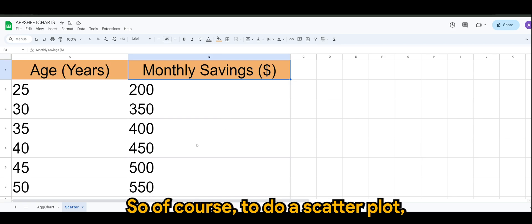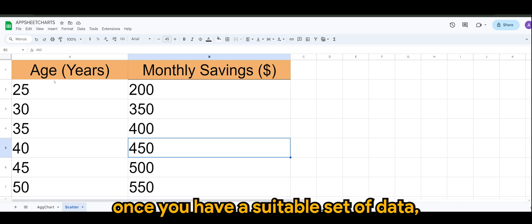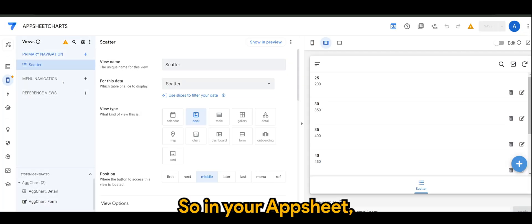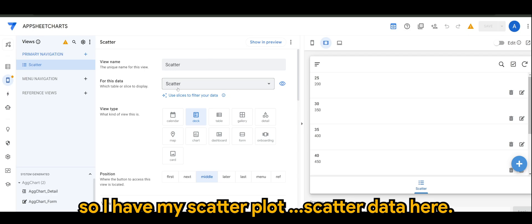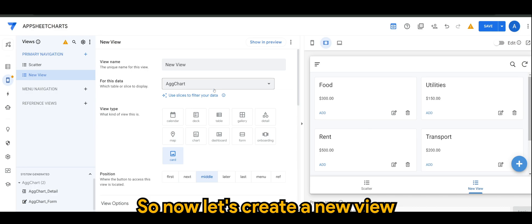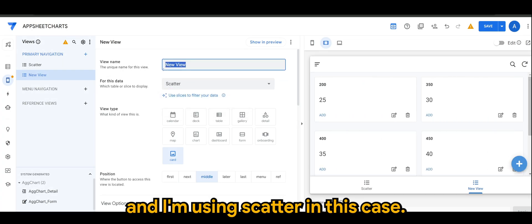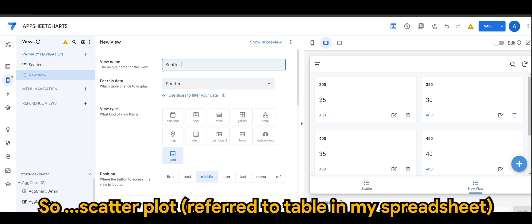To do a scatter plot, once you have a suitable set of data something like this, in your AppSheet I have my scatter plot scatter data here. So now let's create a new view. I'm using scatter in this case, scatterplot.